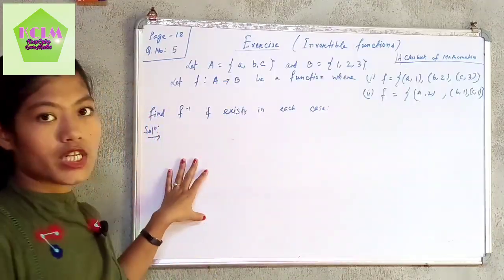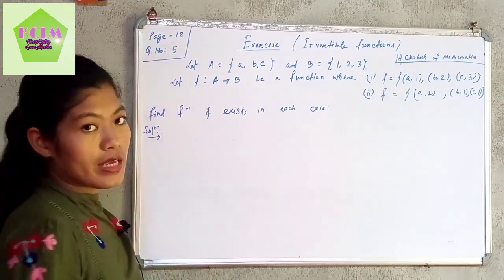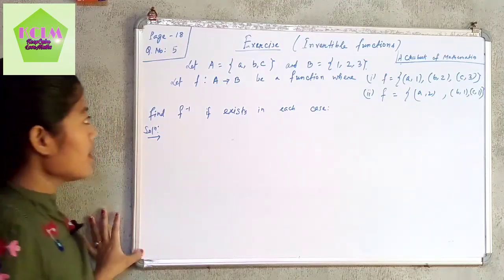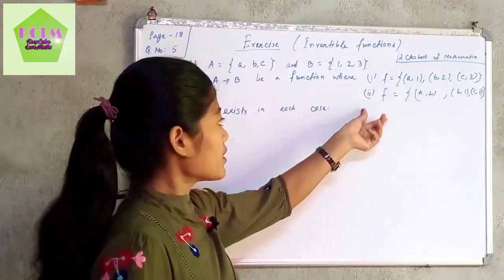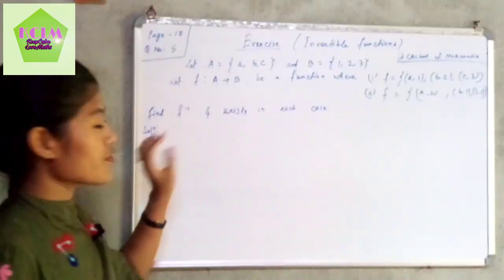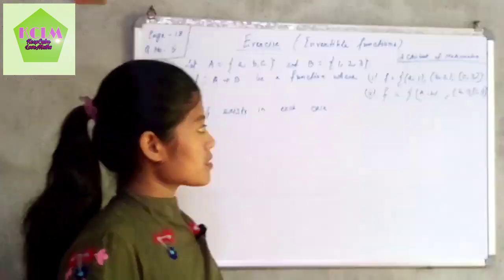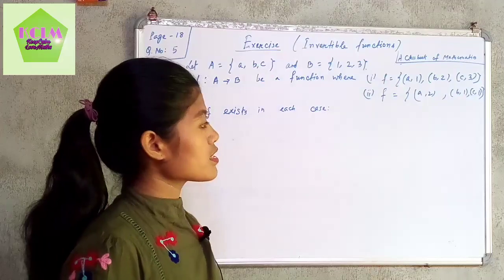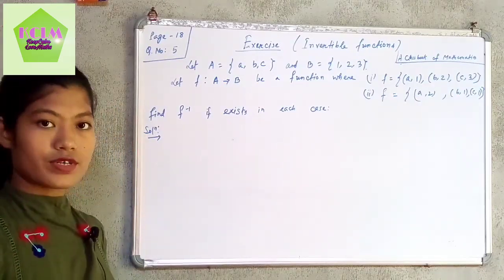Our second question is question number 5 from the exercise on invertible functions. Let A = {a, b, c} and B = {1, 2, 3}, and let f be a function from A to B. Case 1: f = {(a,1), (b,2), (c,3)}. Case 2: f = {(a,2), (b,1), (c,1)}. We need to check whether the inverse of f exists in each case.